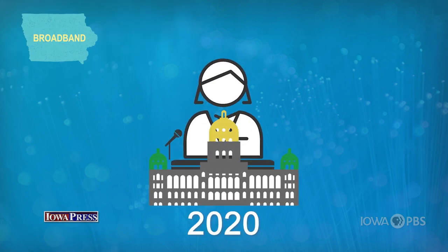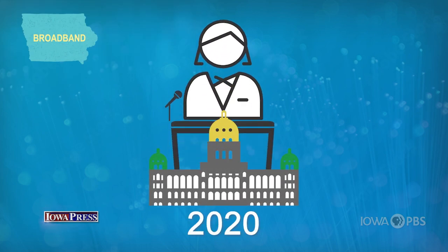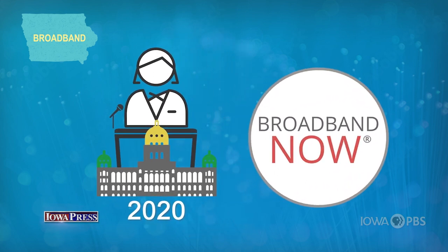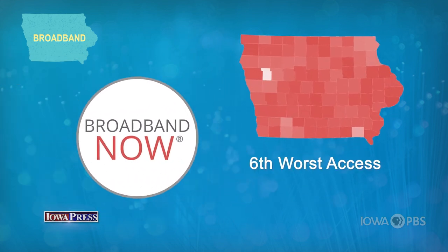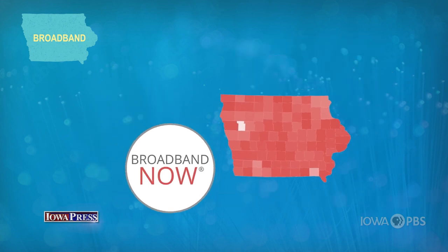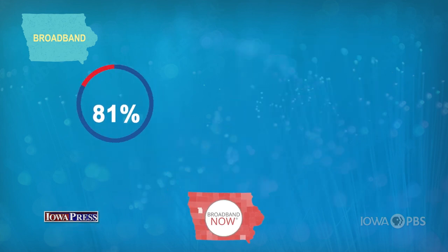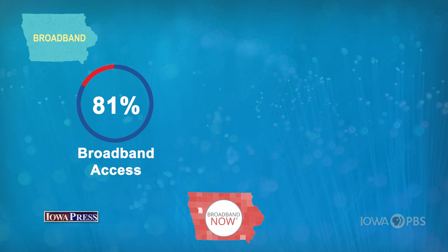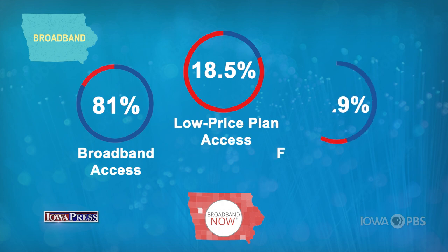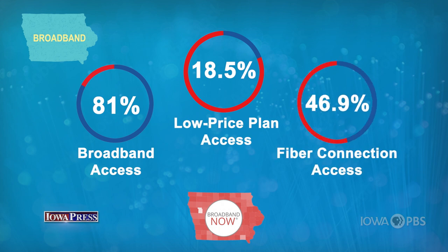In 2020, Governor Kim Reynolds started her push for funding rural Iowa broadband expansion by sharing a BroadbandNow.com study that Iowa has the nation's sixth worst broadband access, and on average, the second slowest Internet speeds in the country. That study found 81% of Iowans have access to broadband speeds, less than 20% have access to low-priced broadband plans, and less than half the state has access to fiber-optic broadband.